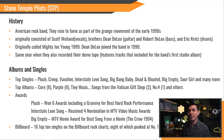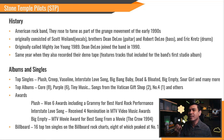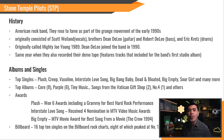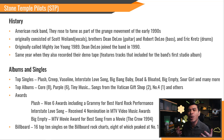Stone Temple Pilots history. STP is an American rock band based from San Diego, California. They rose to fame as part of the grunge movement in the early 90s. The band's original lineup consists of Scott Weiland, Din Delillo, Robert Delillo — they are brothers — and Eric Kretz. The band was formed in 1989 and were originally named Mighty Joe Young. But when Din Delillo joined the band in 1990, they renamed to STP. This is the same year when they also recorded their demo tape, which features tracks that would go on to be re-recorded for the band's first studio album.